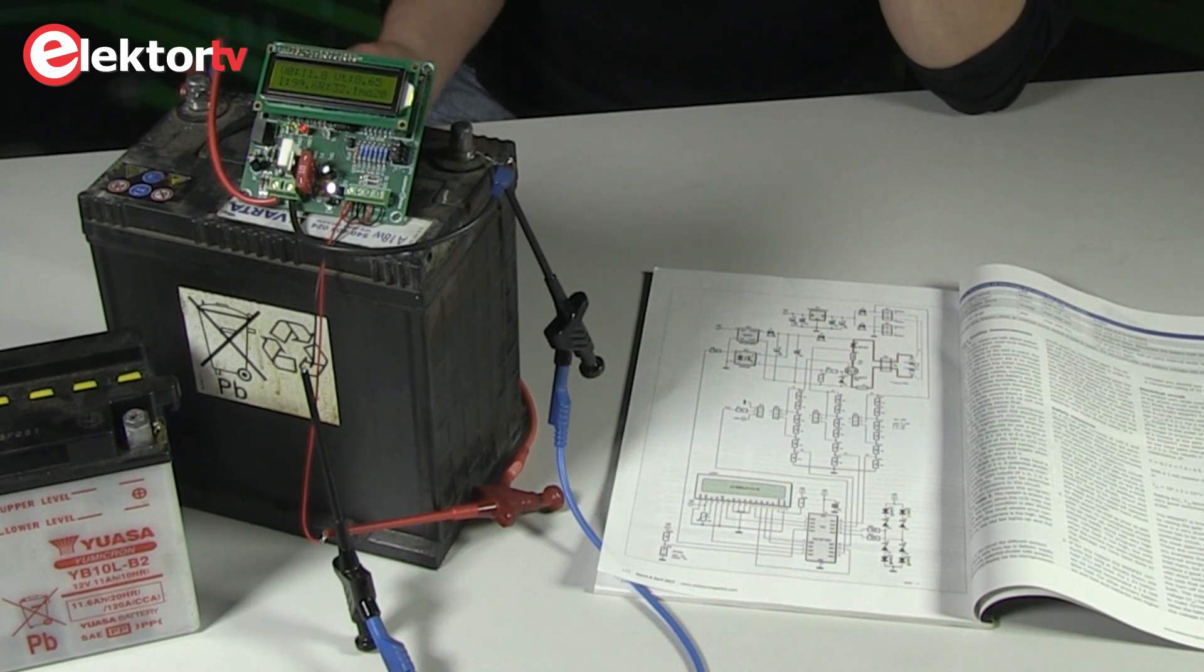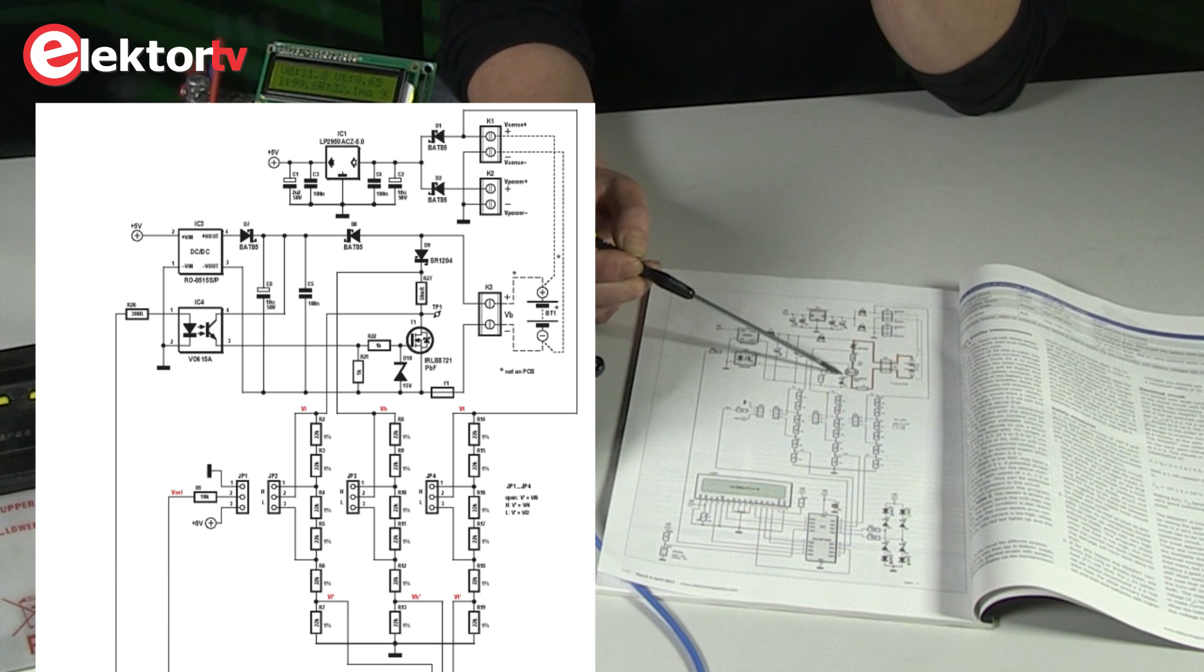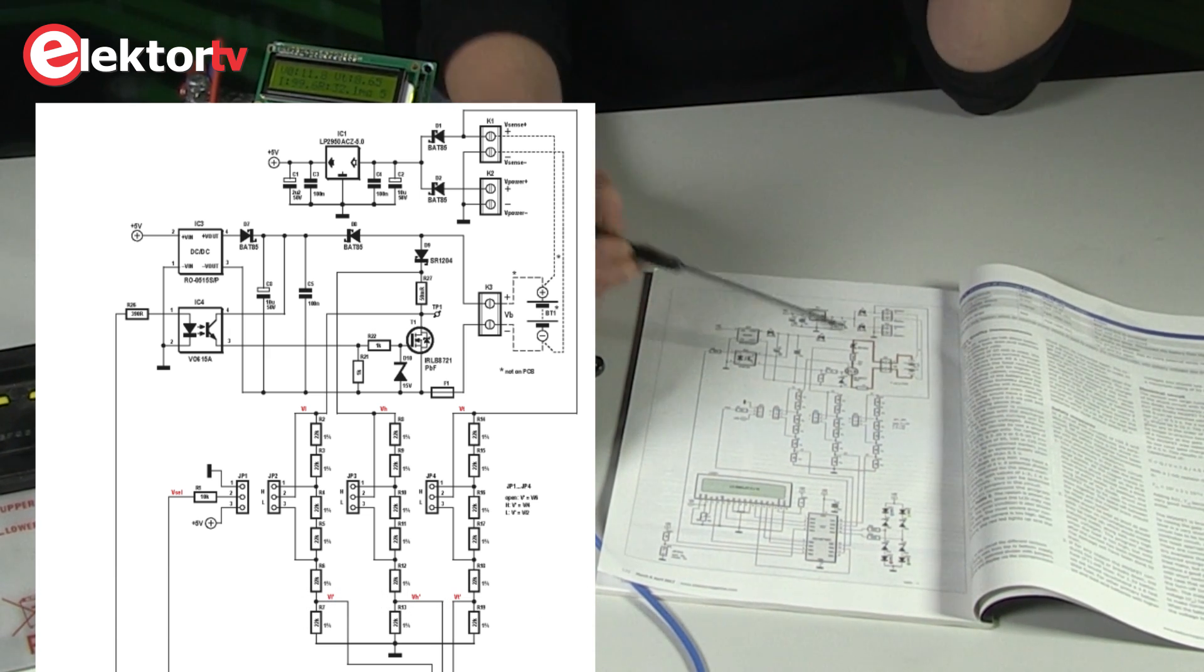There is also a DC-DC converter over here. To make sure that this field effect transistor has good sharp pulses that it opens at once and closes at once, you have to have a high enough voltage on the gate to switch it open.